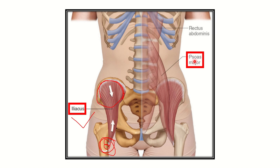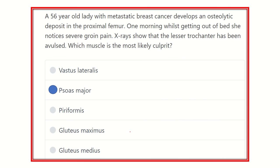On the other hand, above the iliacus muscle, there is another muscle — the psoas major. The psoas major originates from the lumbar vertebrae, descends down above the iliacus, and finally inserts into the lesser trochanter. So there are two muscle attachments at the lesser trochanter: iliacus and psoas major. Contraction of either muscle can cause avulsion of the lesser trochanter, particularly given the osteolytic deposit weakening the bone.